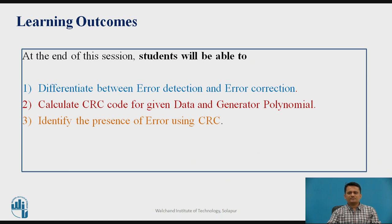At the end of this session, students will be able to differentiate between the two error control schemes: error detection and error correction. Students will also be able to calculate the CRC code for given data using a generator polynomial and identify the presence of error in the transmitted data using CRC.